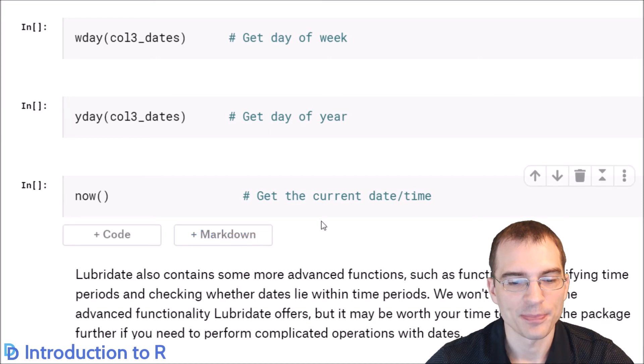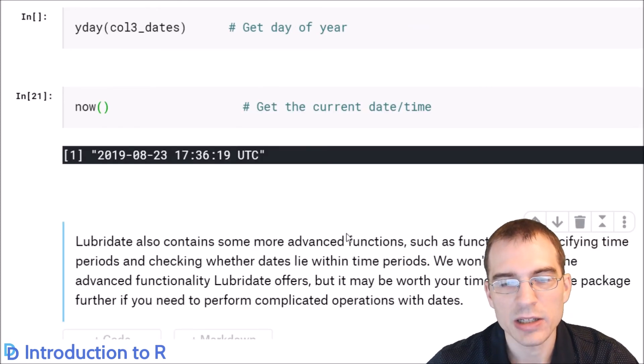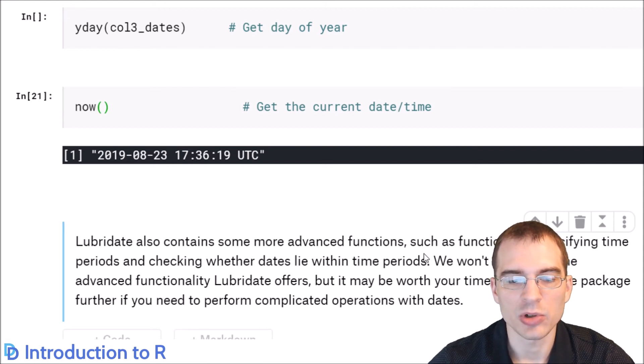You can also use now to get the current date time, kind of like the built-in date function. It prints in a bit different format, but essentially does the same thing. Lubridate contains a lot of other tools for doing things like specifying periods of time and durations and checking whether dates lie within periods of time. We're not going to go into all that more advanced functionality, but if you need to do advanced things with dates and times, Lubridate is probably what you're going to want to work with instead of trying to do everything with base R.